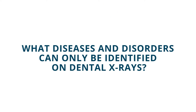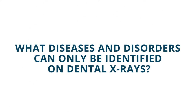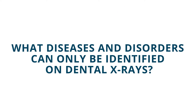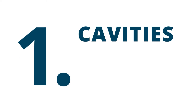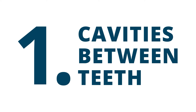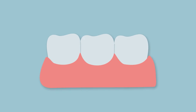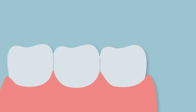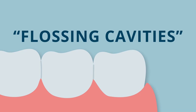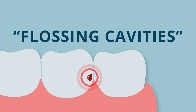What diseases and disorders can only be identified on dental x-rays? 1. Cavities between teeth. Many cavities develop between teeth. These flossing cavities begin on the side of the tooth and work their way inward, only becoming visible to the eye once significant tooth enamel has been destroyed.